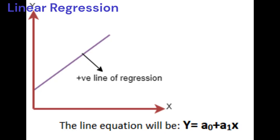Positive linear relationship: If the dependent variable increases on the y-axis and independent variable increases on the x-axis, then such a relationship is termed as a positive linear relationship.